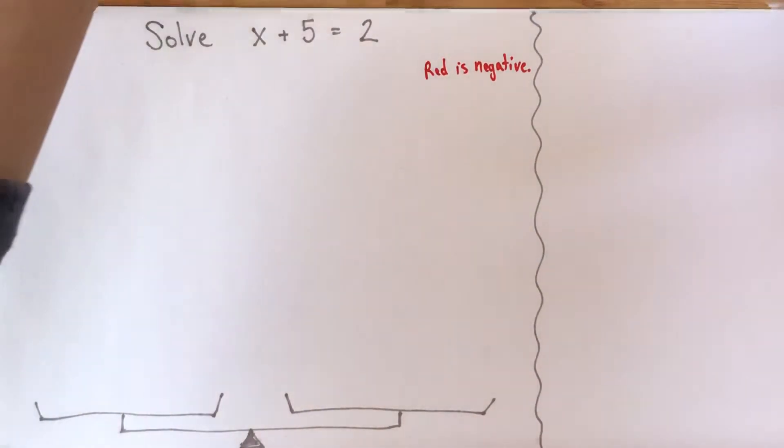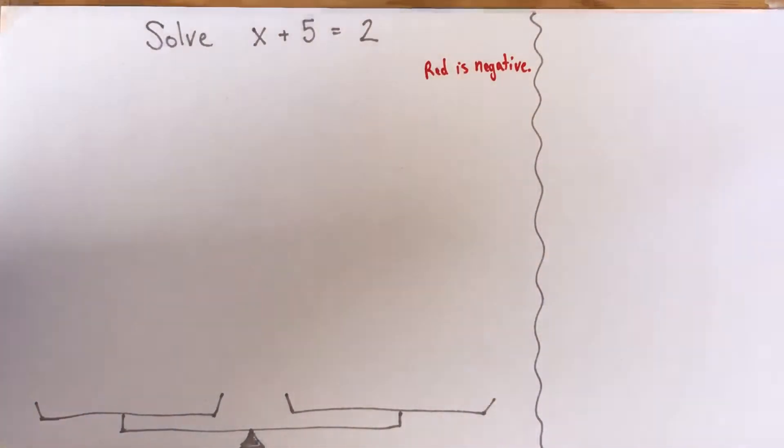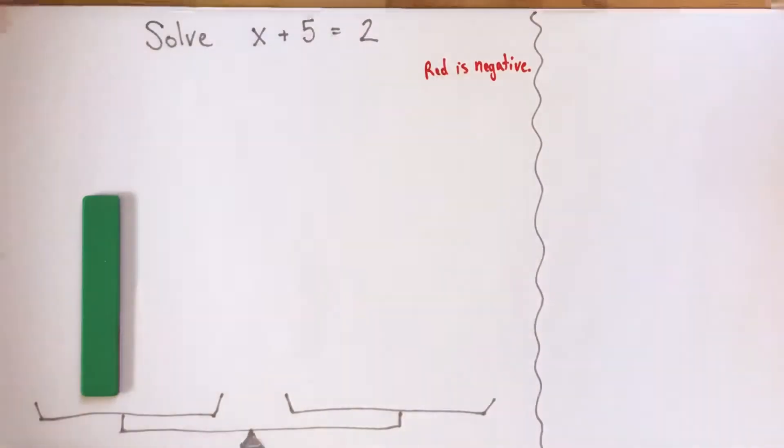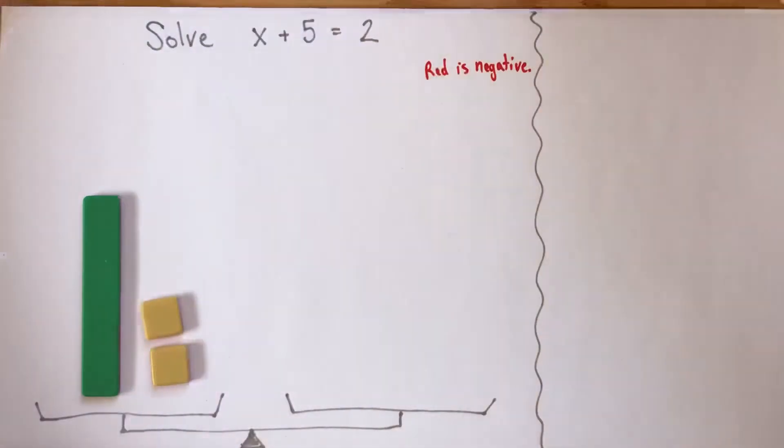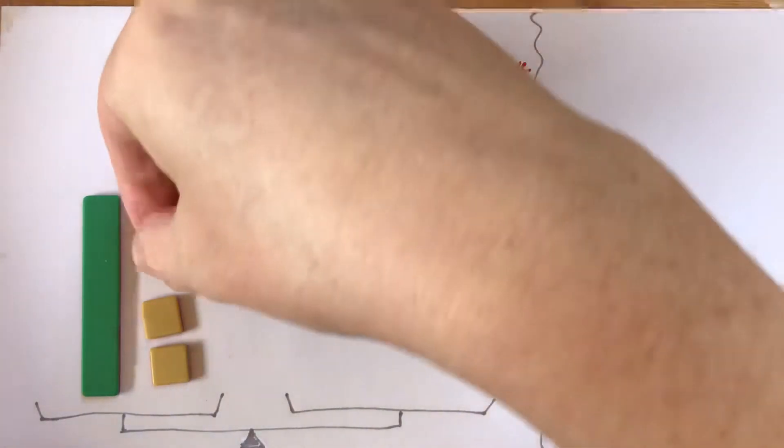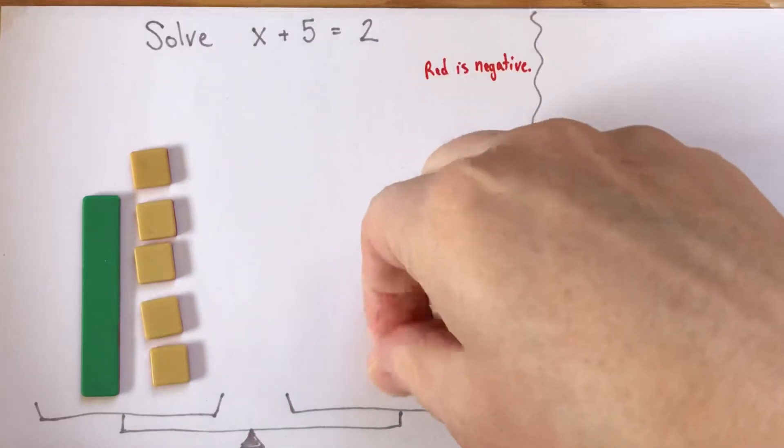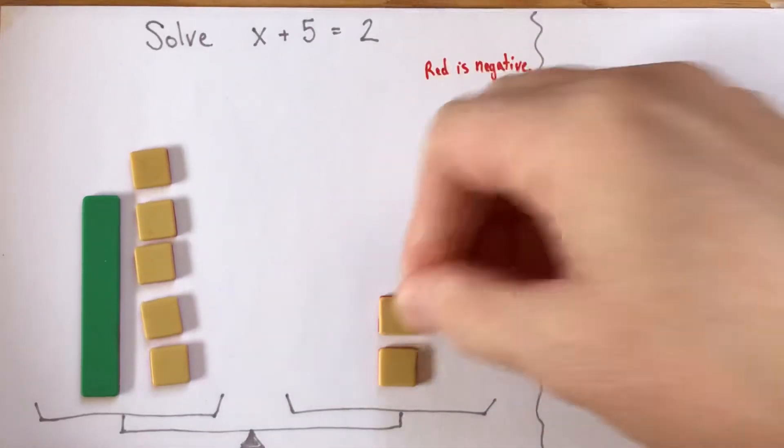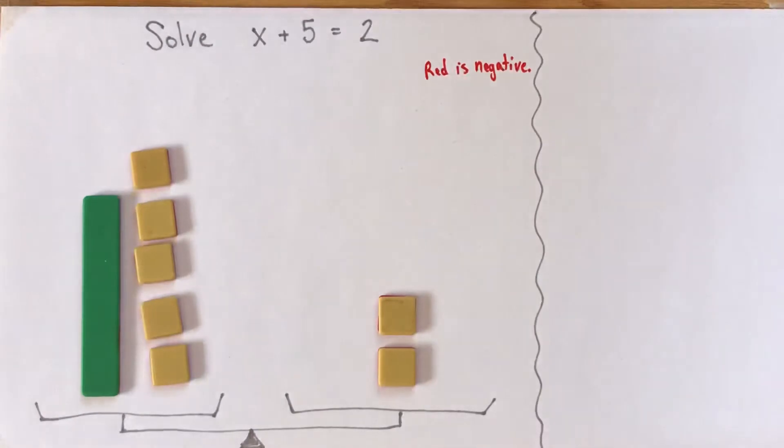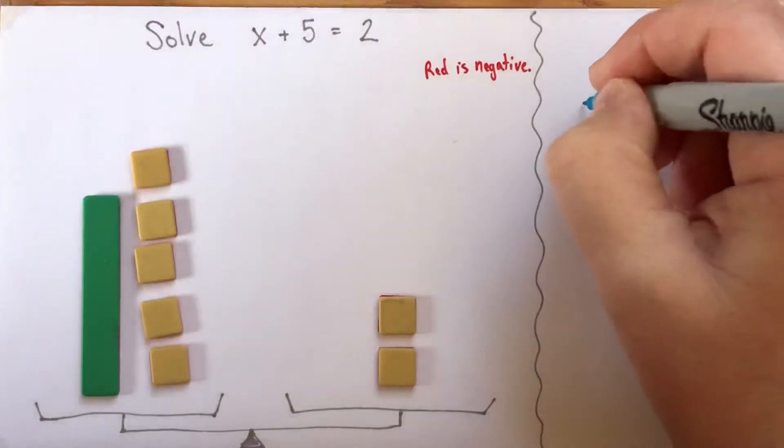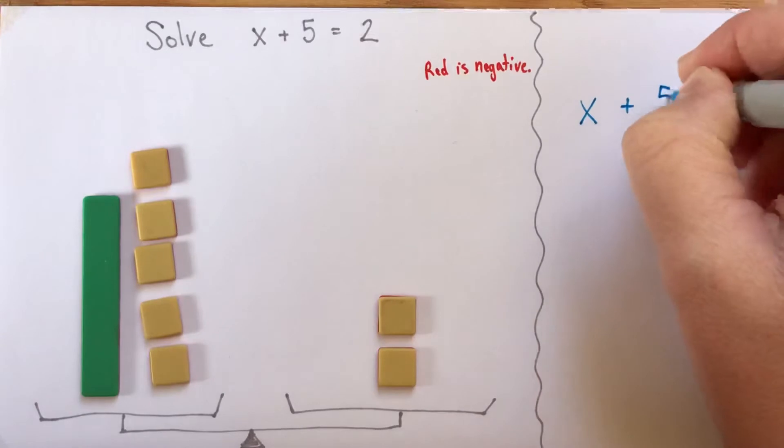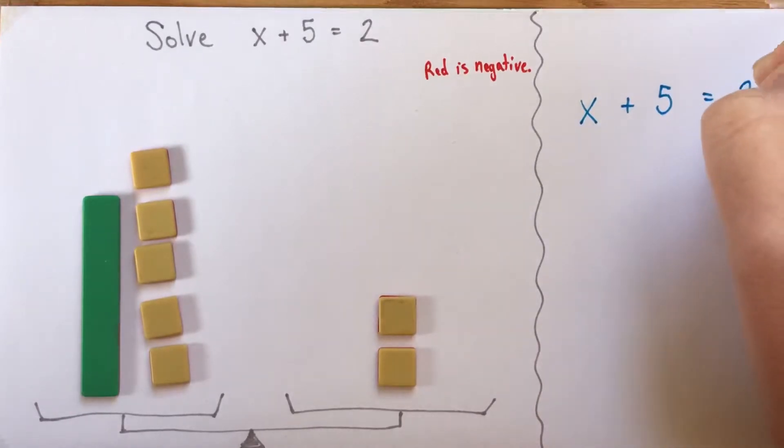Okay, we'll do it two different ways. We'll do it one way with algebra tiles. There's an x, and then plus 5. With the algebra tiles I'm using, I'm using reds to be negative, so all the other colors are positive. So there's x plus 5, and that balances out 2, or that's exactly the same as 2.